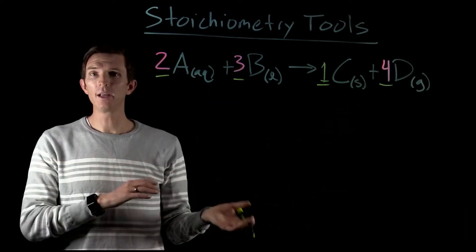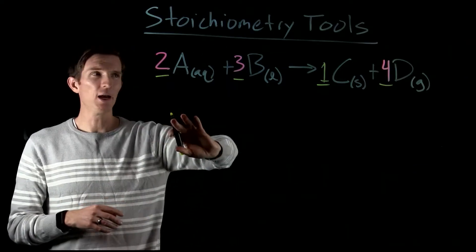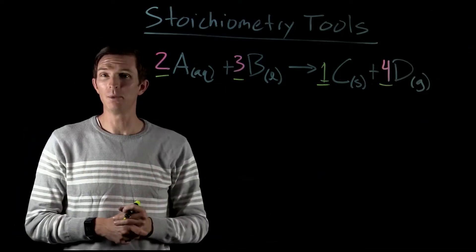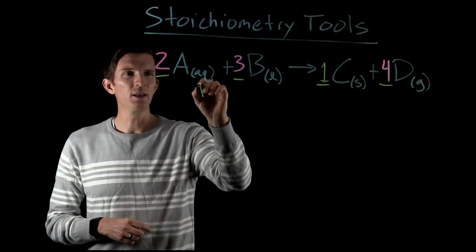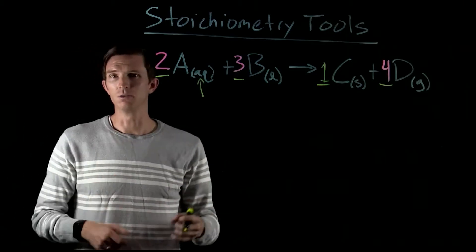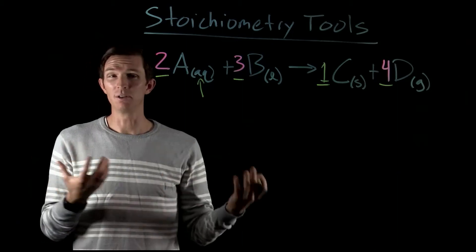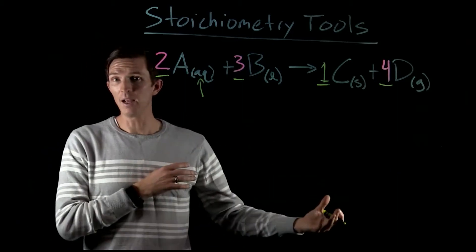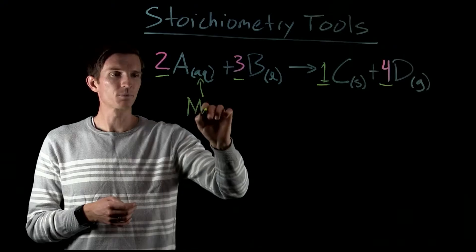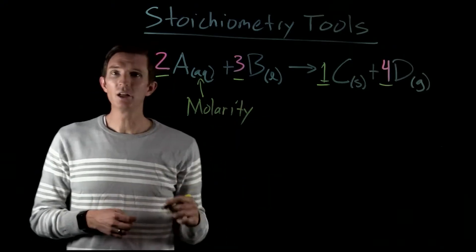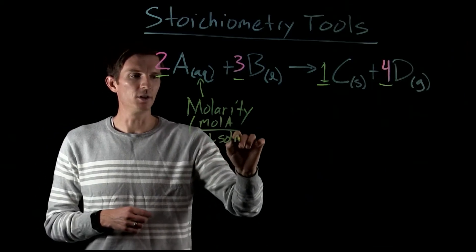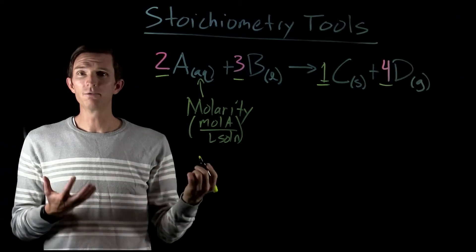If we're going to look at how much of reactant A we would have, that's going to tell us how much C we would produce. We want to think about what would be the main way that we would measure those. If we're dealing with something that is aqueous — that is, a solution — it wouldn't make sense to measure the mass of that solution because it's not all A. If it's aqueous, it's mostly water with some amount of A. So when dealing with an aqueous solution, molarity is going to be our conversion factor — moles of A per liters of solution.